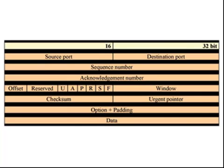Sequence number: this usually specifies a number assigned to the first byte of data in the current message. In the connection establishment phase, this field can also be used to identify an initial sequence number to be used in an upcoming transmission. Acknowledgement number: this contains the sequence number of the next byte of data that the receiver of the packet expects to receive. Once a connection is established, this value is sent.